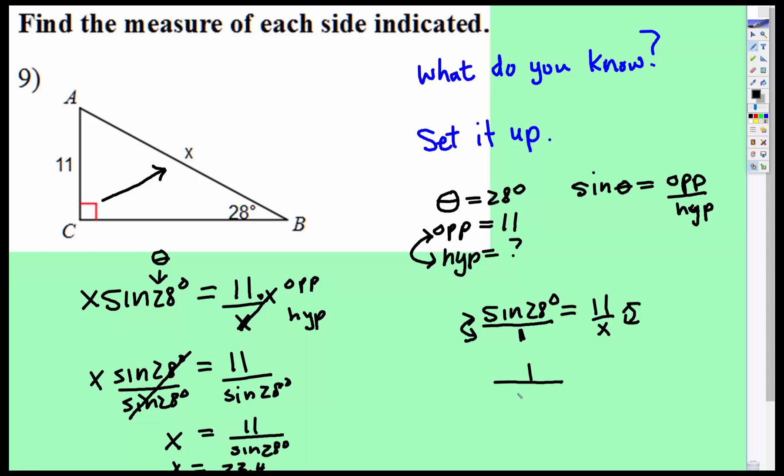So now we have 1 over sine of 28 degrees is equal to x over 11. And now you can just multiply both sides by 11.